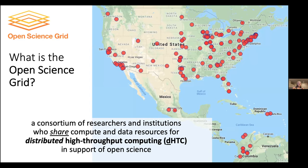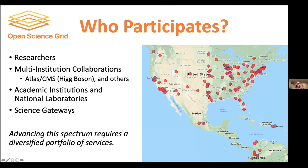So what is the Open Science Grid? It's really a consortium of researchers, organizations of researchers, and institutions of various types who share computing and data resources for the purpose of scalable distributed high-throughput computing. There are well over 100 different sites and institutions that provide resources. OSG operates software that allows these resources to be pooled together like one large virtual cluster for use by researchers, including individual researchers, research groups, and even large multi-institutional collaborations.